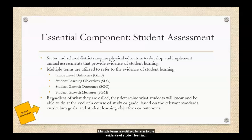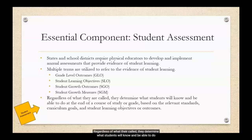Multiple terms are utilized to refer to the evidence of student learning: grade-level outcomes, or GLOs; student learning objectives, or SLOs; student growth outcomes, or SGOs; or student growth measures, SGMs. Regardless of what they're called, they determine what students will know and be able to do at the end of a course of study or grade based on the relevant standards, curriculum goals, and student learning objectives or outcomes.